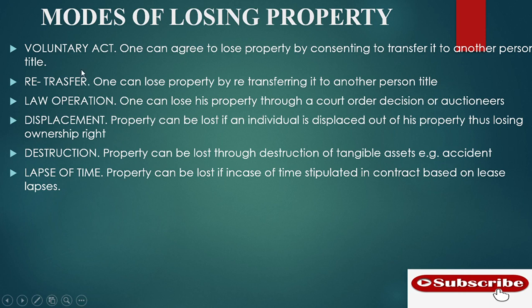One of the modes one can lose property is through a voluntary act. One can agree to lose property by consenting to transfer it to another person's title. A good example is through a valid contract.